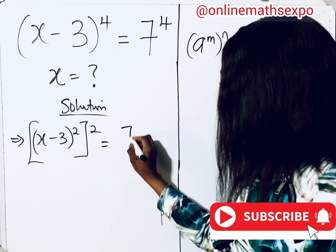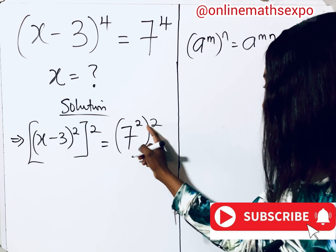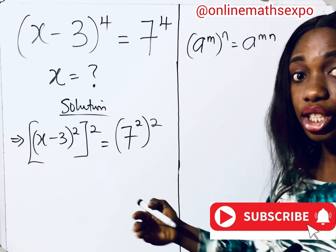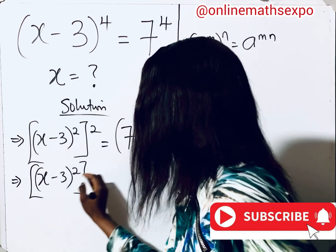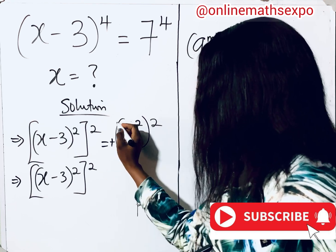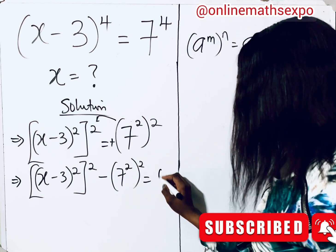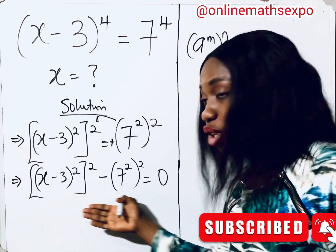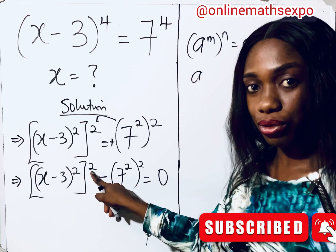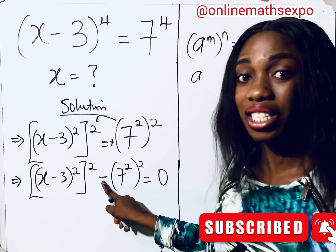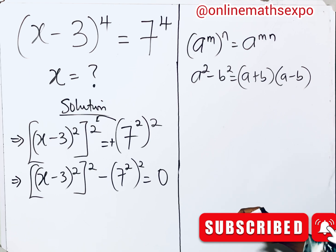This equals 7, and you can also write the right side as 7 squared, raised to the power of 2 — multiplying the powers gives you 4. We are doing this to simplify. So we have x minus 3 all to the power of 2, raised to the power of 2, minus 7 squared all to the power of 2, equal to 0. Now remember your difference of two squares: when this value is raised to the power of 2 and this is also raised to the power of 2, with subtraction between them, we apply a squared minus b squared equals (a + b)(a − b).